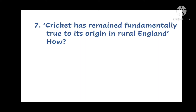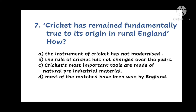Question number 7. Cricket has remained fundamentally true to its origin in rural England — how? A. The instruments of cricket have not modernized. B. The rules of cricket have not changed over the years. C. Cricket's most important tools are made of natural pre-industrial material. Or D. Most of the matches have been won by England. How has cricket remained fundamentally true to its origin?